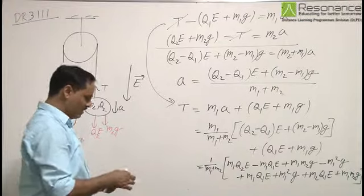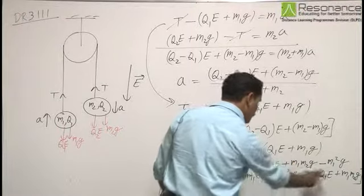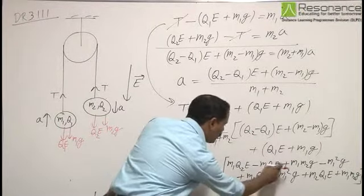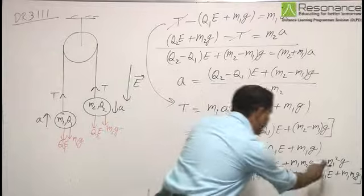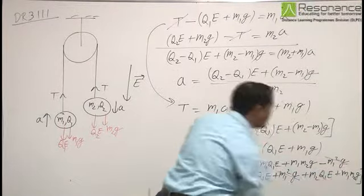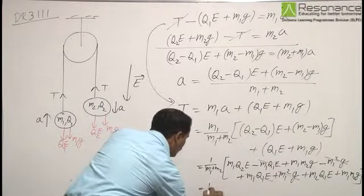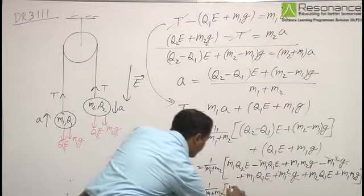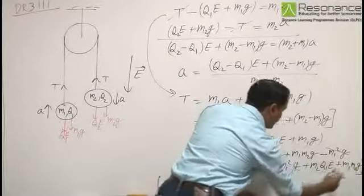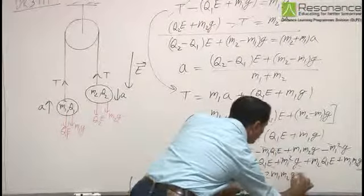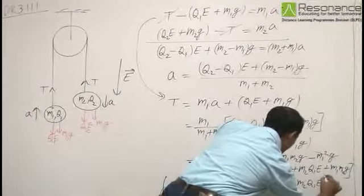Here the terms which are common, let us see: minus M1Q1E and plus M1Q1E, this is cancelled; minus M1 squared g plus M1 squared g, this term is also cancelled. We are left with 1 over (M1 plus M2) times [M1Q2E, now we have M1M2g plus M1M2g, so plus 2M1M2g, and plus M2Q1E].